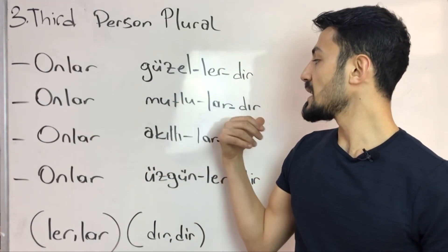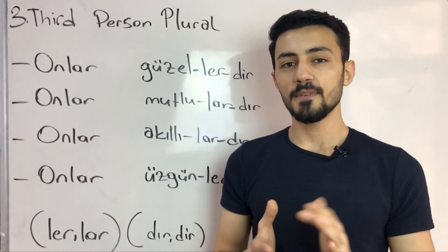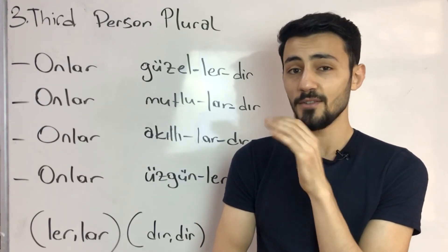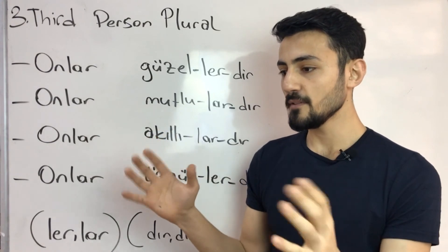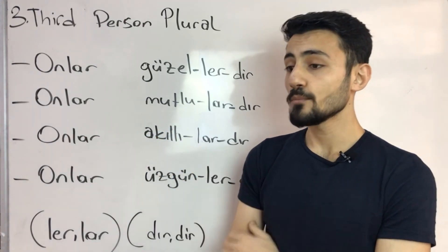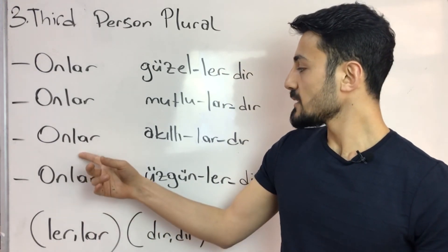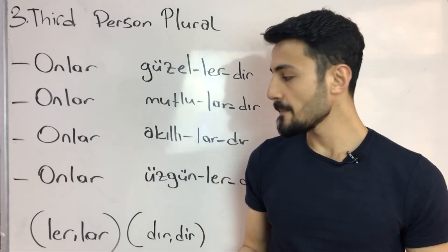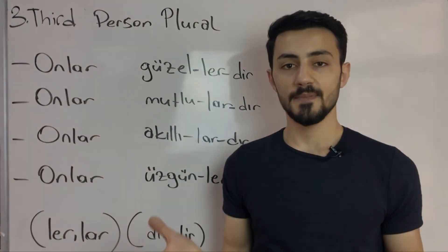Onlar mutlulardır. At the same time, maybe you separated from your boyfriend, you think Onlar mutlulardır - you just predicted, you don't know anything. If you see some people are happy, you can say Onlar mutlular. In this time, Onlar akıllılardır - They are clever. Onlar üzgünlerdir - They are upset.